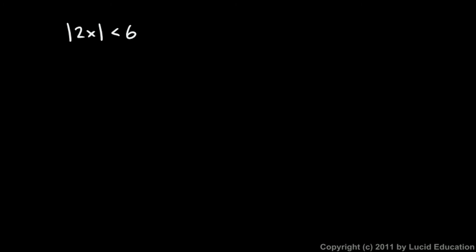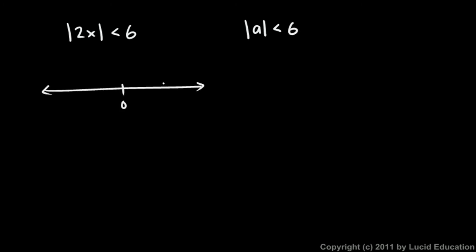So if the absolute value of something is less than 6, that means the distance from 0 is less than 6. What if we had the absolute value of a is less than 6? On the number line, here's 6 and here's negative 6. This means the distance from a to 0 has to be less than 6. You could start at 0 and go 6 in either direction, but you have to stay within 6 units of 0, so all of these numbers.